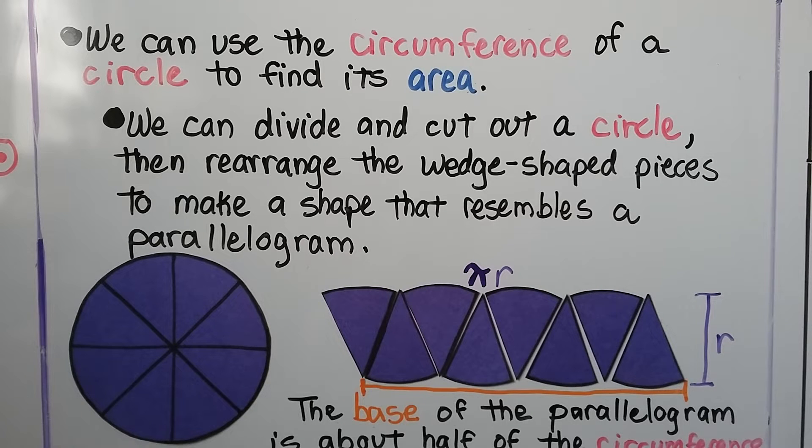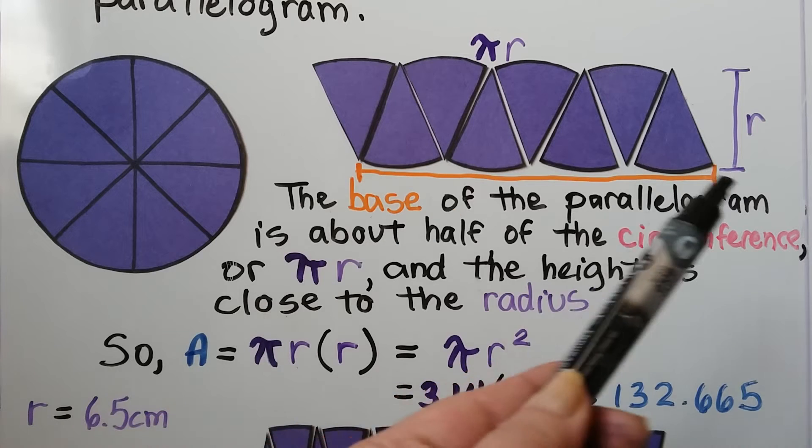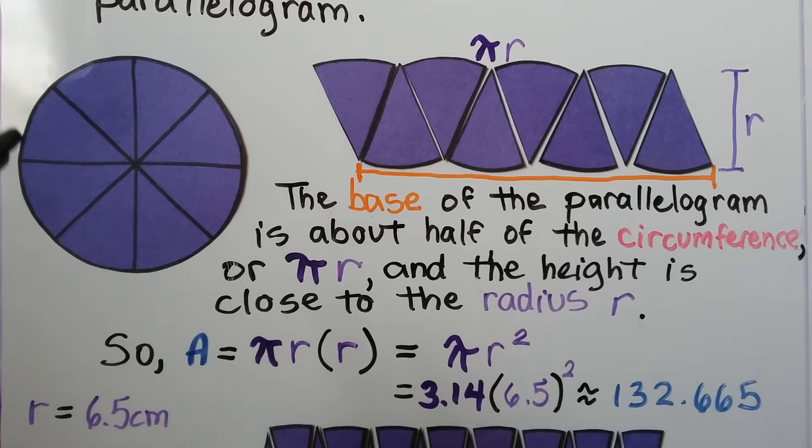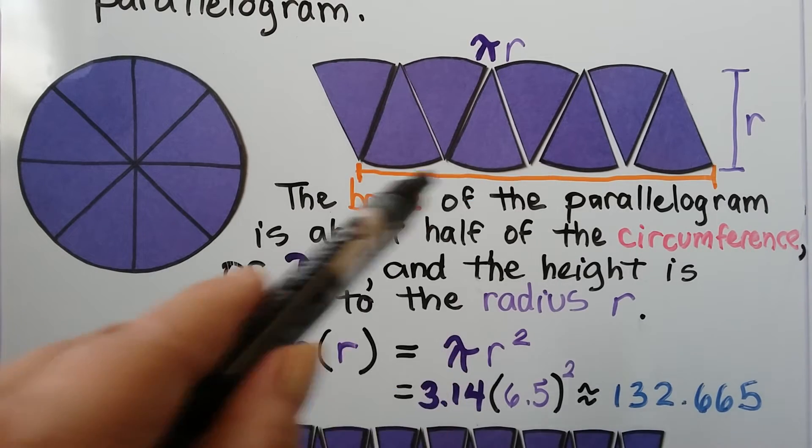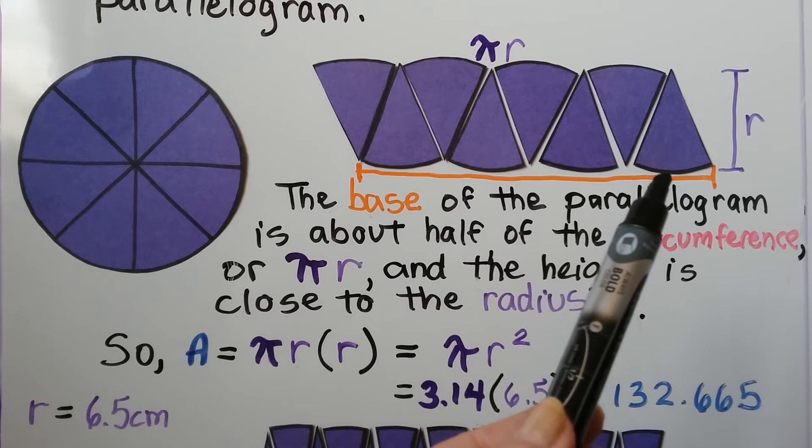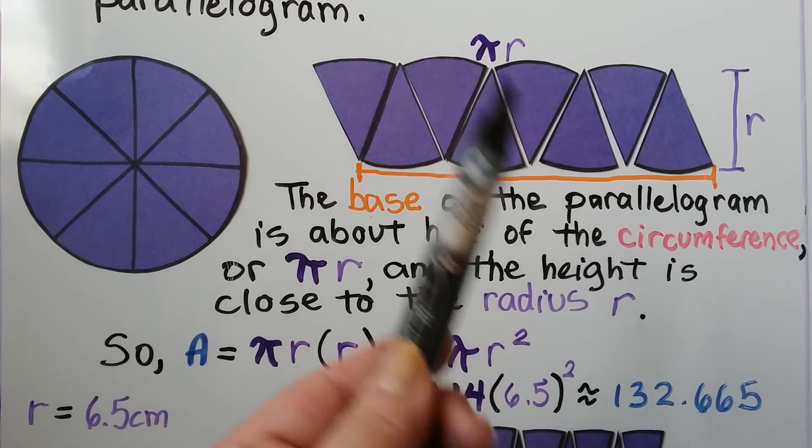We can use the circumference of a circle to find its area. We divide and cut out a circle, then rearrange the wedge-shaped pieces to make a shape that resembles a parallelogram. When we have a rectangle, we do length times width. The base of the parallelogram is about half the circumference of the circle, or pi times r. And the height is close to the radius r. So we can see the area equals pi r times r.